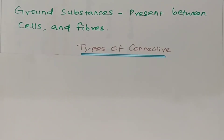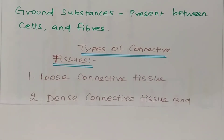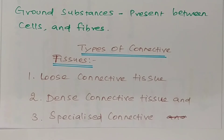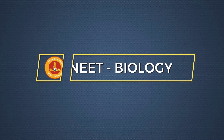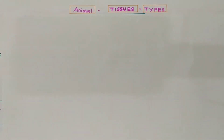Now the types of connective tissue — there are three types: loose connective tissues, dense connective tissues, and specialized connective tissues. This important chart is highly helpful for you in order to attend the maximum number of questions related to connective tissues.